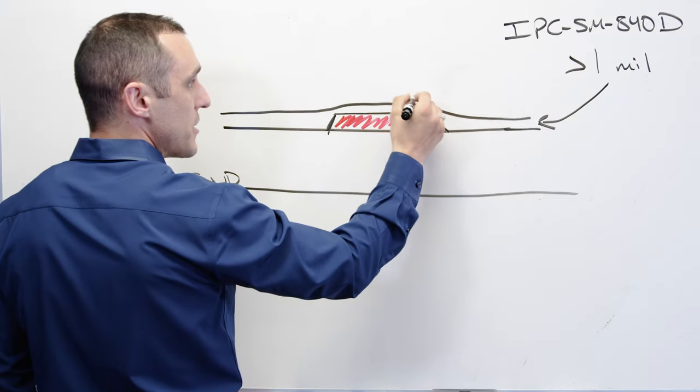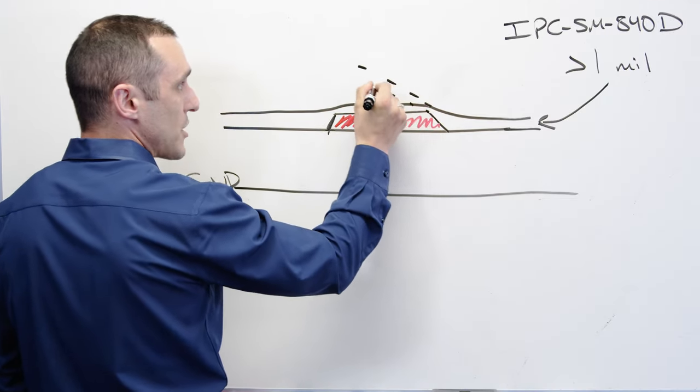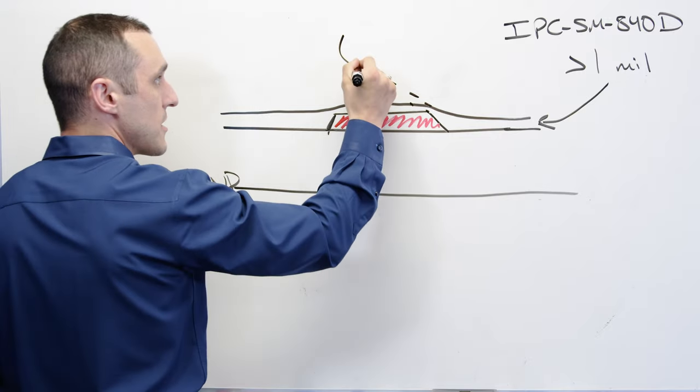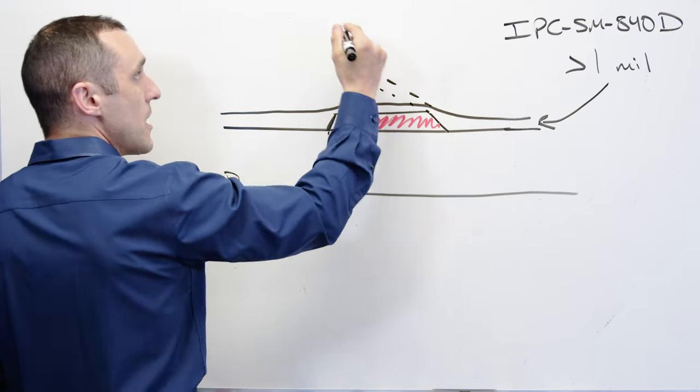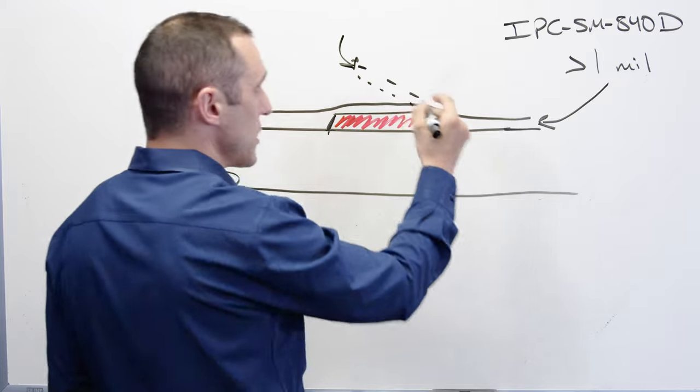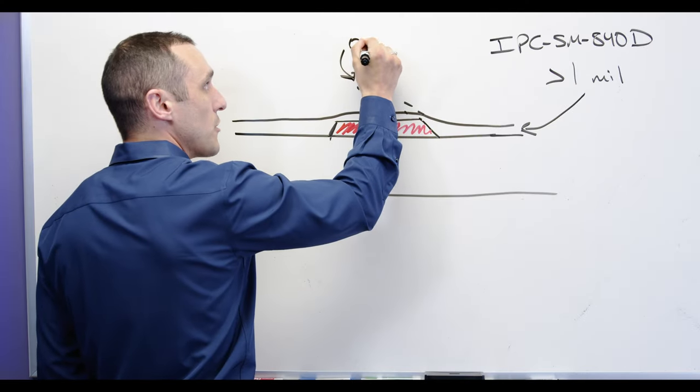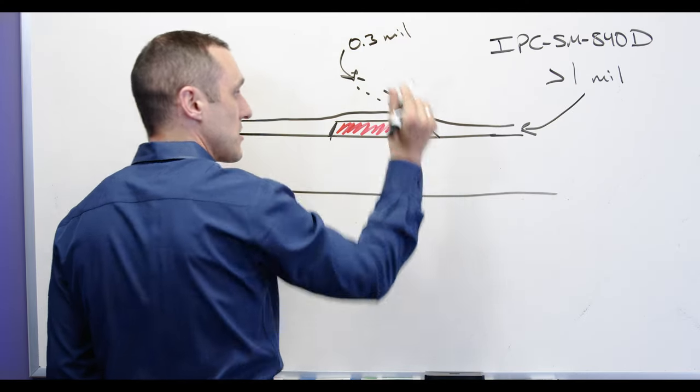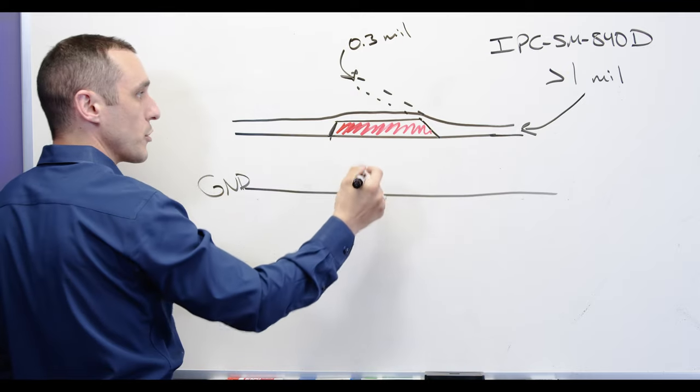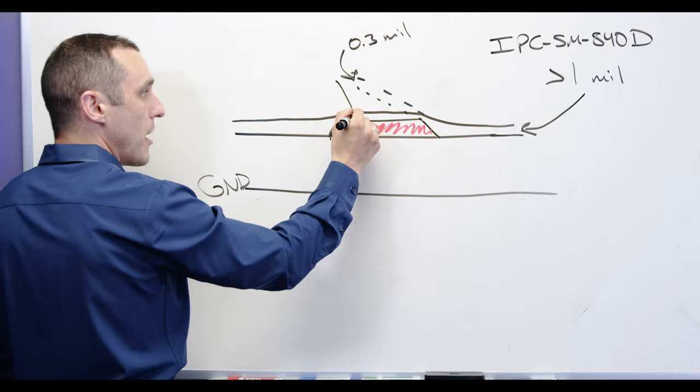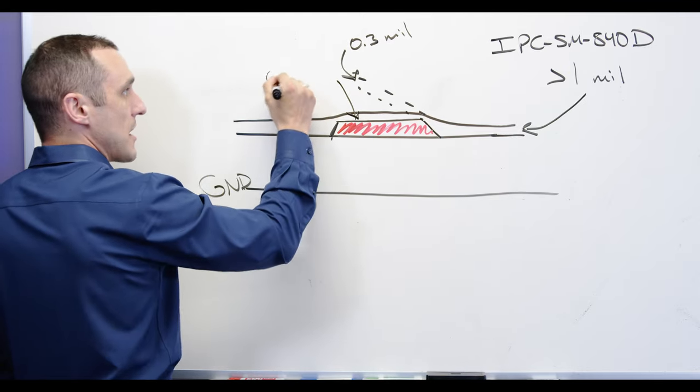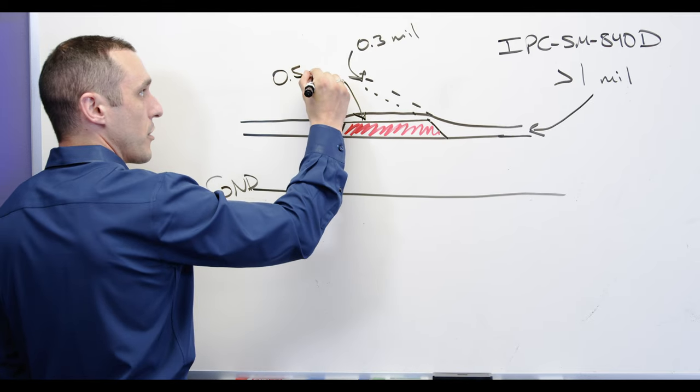Here in this region where the solder mask wraps over the corner of the trace this dimension can be very small and it can actually get down as low as maybe about 0.3 mils in this region where it wraps over and then here above the trace the solder mask thickness can go down to about 0.5 mil.